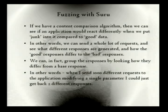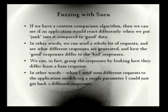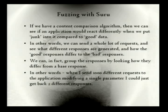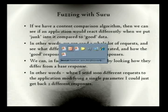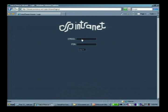We can also do fuzzing with Suru. If we have a content comparison algorithm, we can send junk into different parameters — let's say a thousand different strings into one parameter — see how it reacts, and look at the content compared to a base response, then group responses together. So for a thousand requests to this application, I only get three pages as a result. Here we've got this little site. I can log in with 'test' and 'test,' and you can see that it failed.